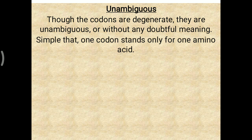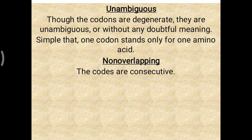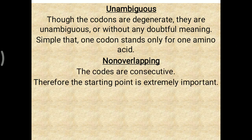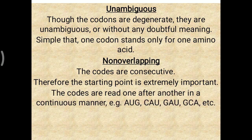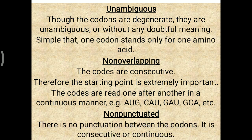Non-overlapping: codons are read one after another in a continuous manner, like AUG-CAU-GAU-GCA, etc. Once reading starts, it continues without skipping — it is not like the first three bases are read, the fourth is skipped, and then the fifth is read. Non-punctuated: there is no punctuation between codons; reading over the mRNA is consecutive and continuous.